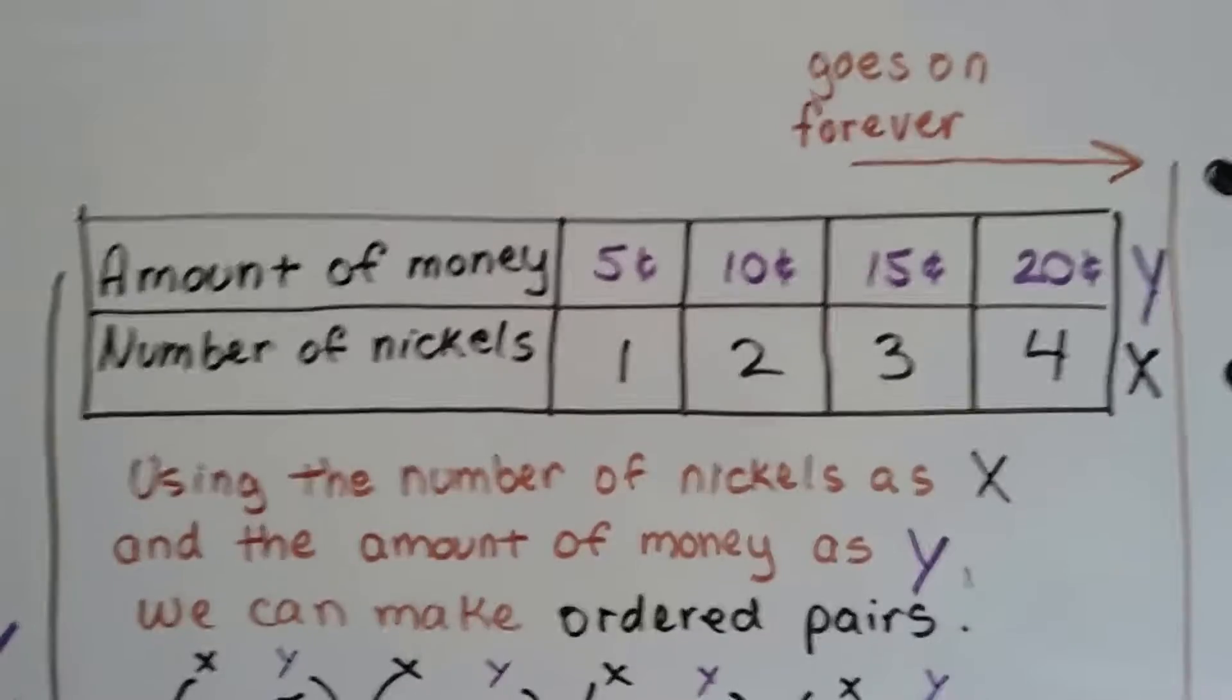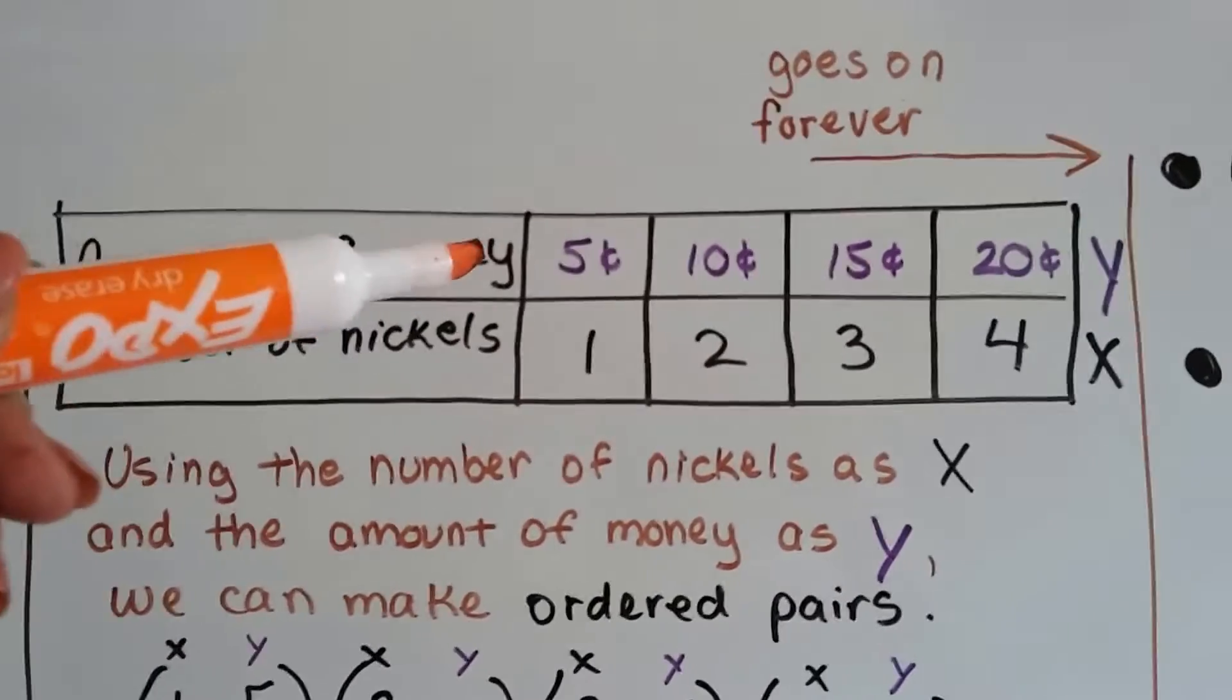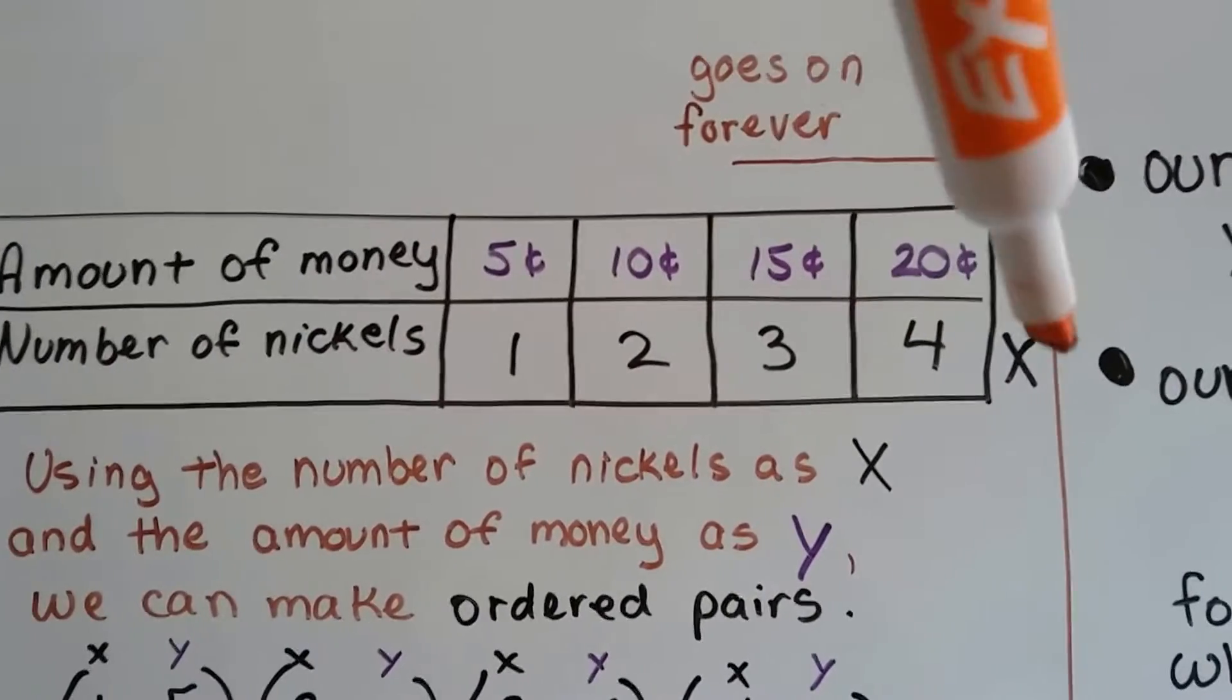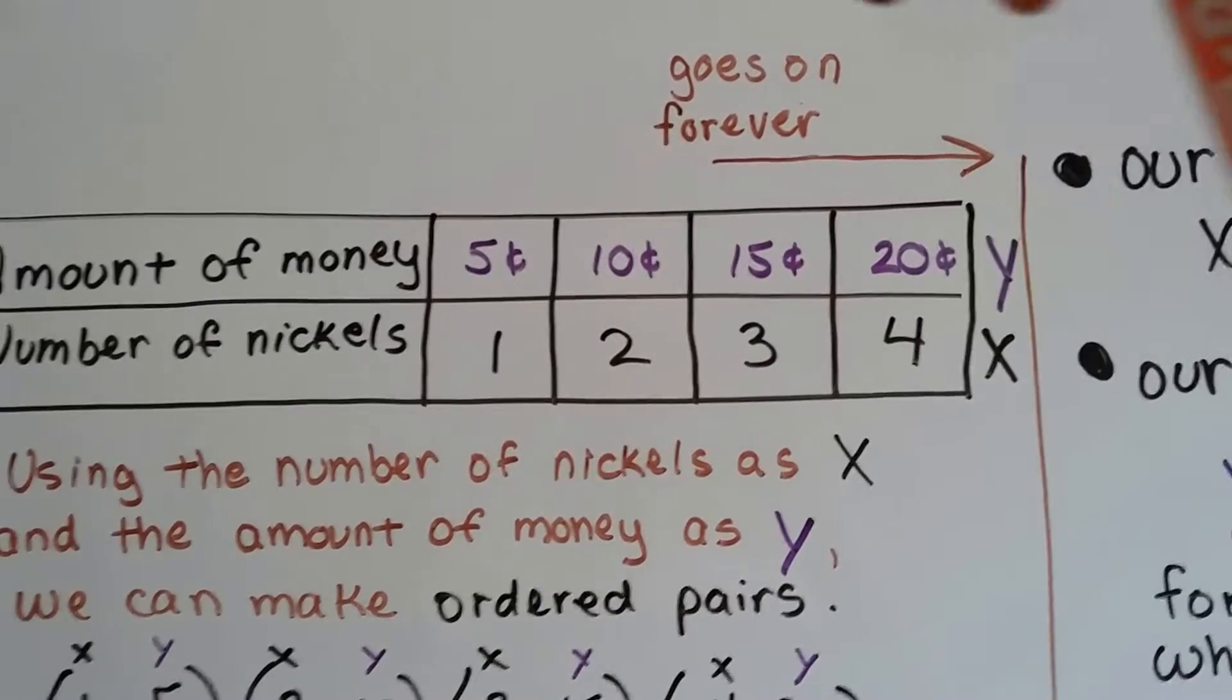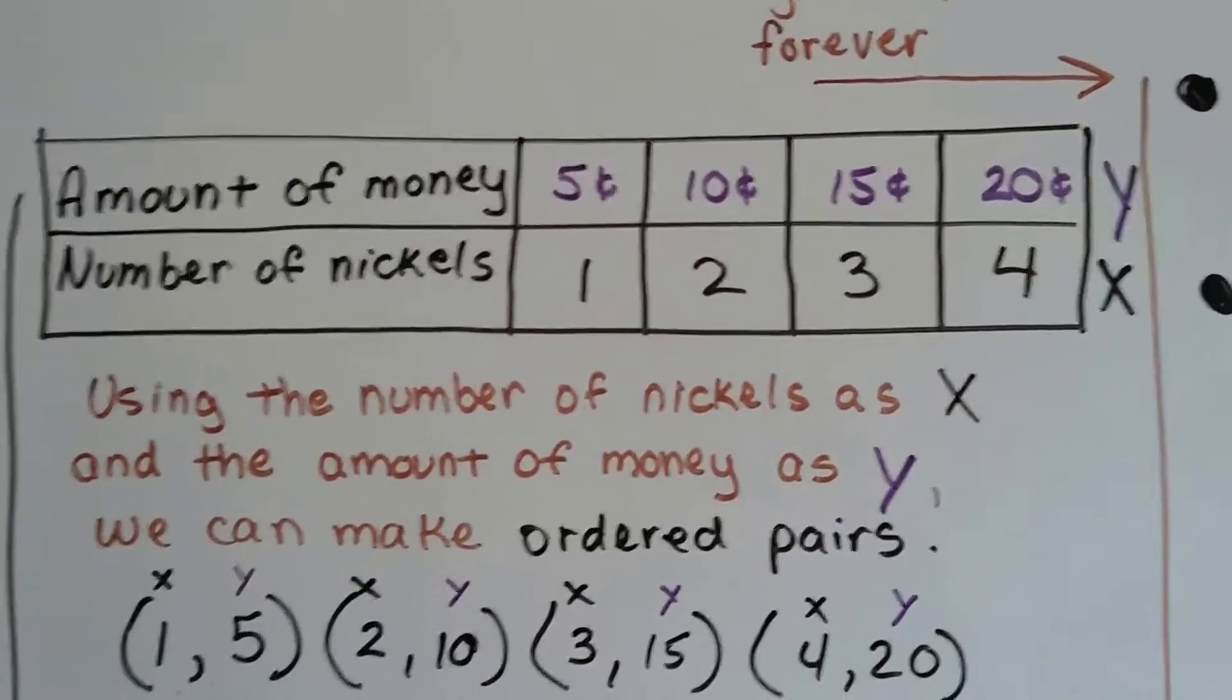So now we're going to use nickels and the number of nickels. The amount of nickels we have is in proportion to the amount of money we'll have. And this table could go on forever. We could have 5, 6, 7, 8, 9. We could have 1,000. And it would just keep going on forever with the value of how much money we've got.